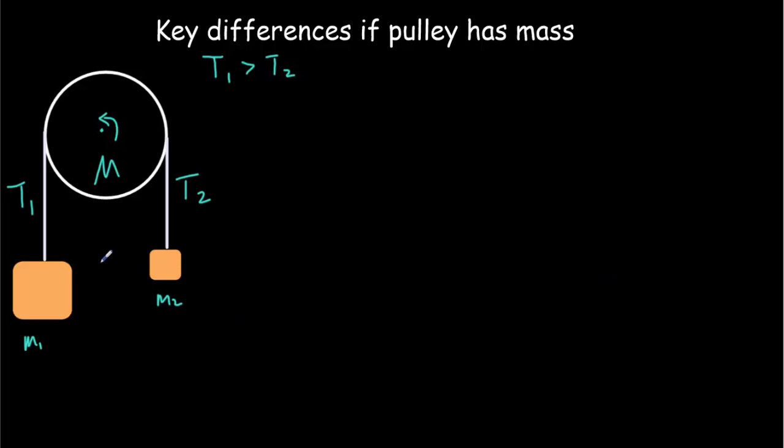So now when we do our free body diagrams, we still have M1g down and we've got T1 up. T1 is less than M1g. And over here, we've got M2g down and a slightly larger T2 up. So T2 would be bigger than M2g.